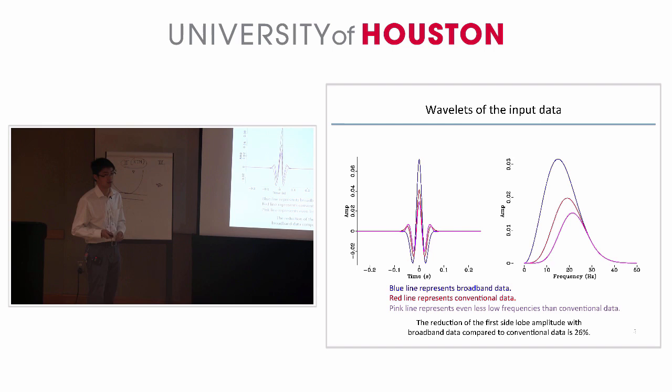Here I use the same wavelength as Chang used for CLIBO3 tests. The blue line is a Ricard wavelet, and we use that wavelet to represent broadband data. The red wavelet is a Ricard wavelet without some low frequency, and we use that to represent conventional data.